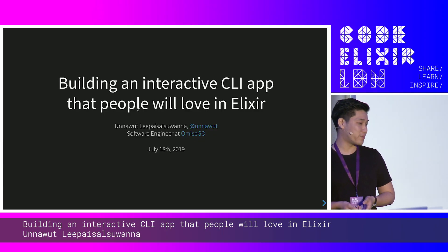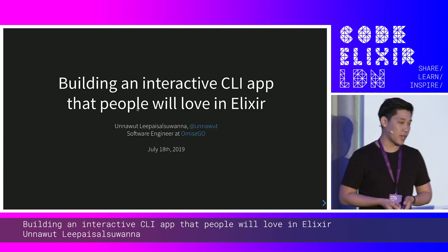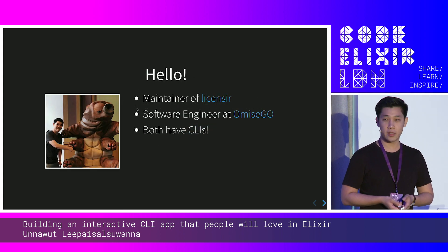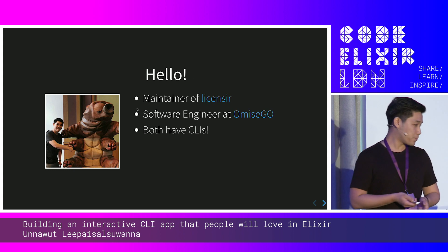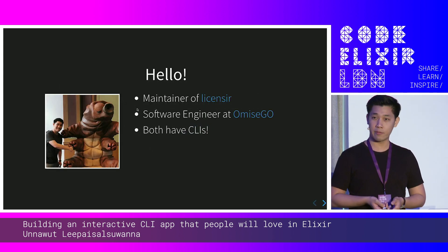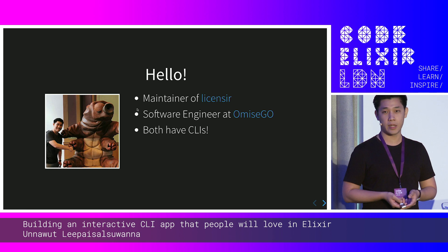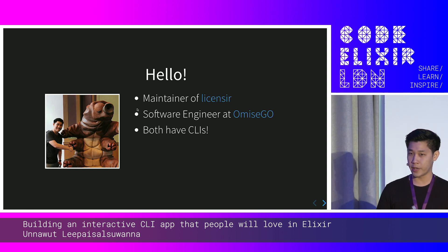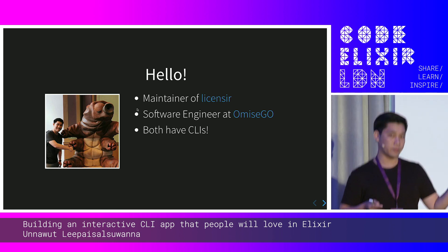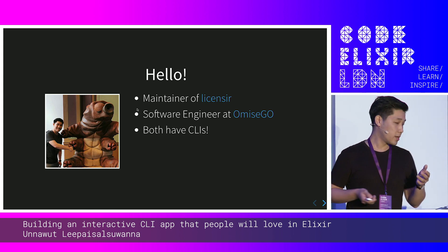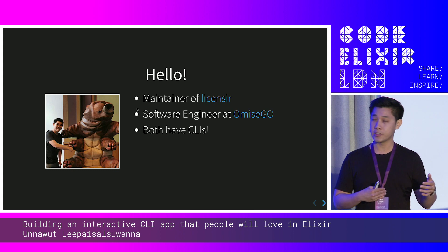Today I'll be talking about building an interactive CLI app in Elixir. The reason I'm doing that is mainly because of two things. I'm currently maintaining a library called Licenser — an Elixir library that crawls all your mix files and all the dependencies, mix files and license files, and compiles them into a list so that you can see what licenses you're using with your project.